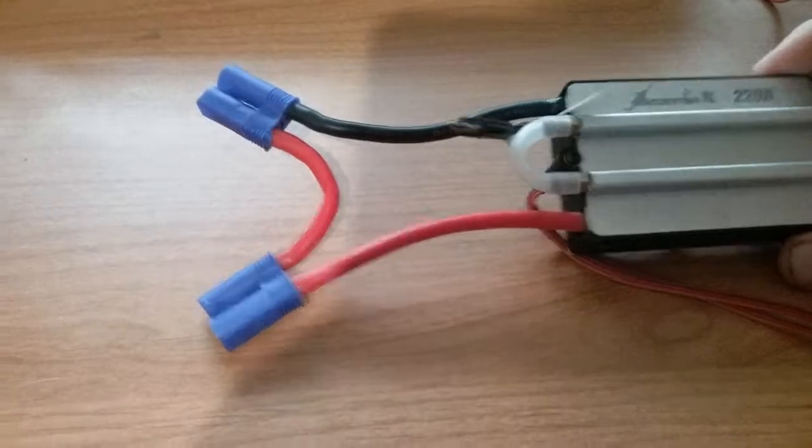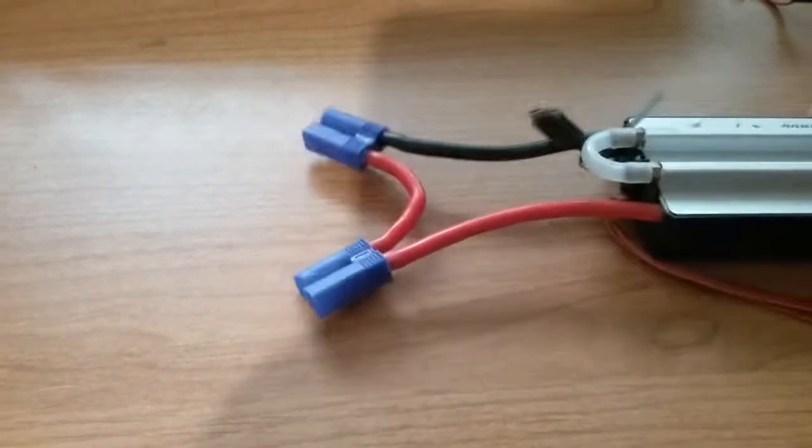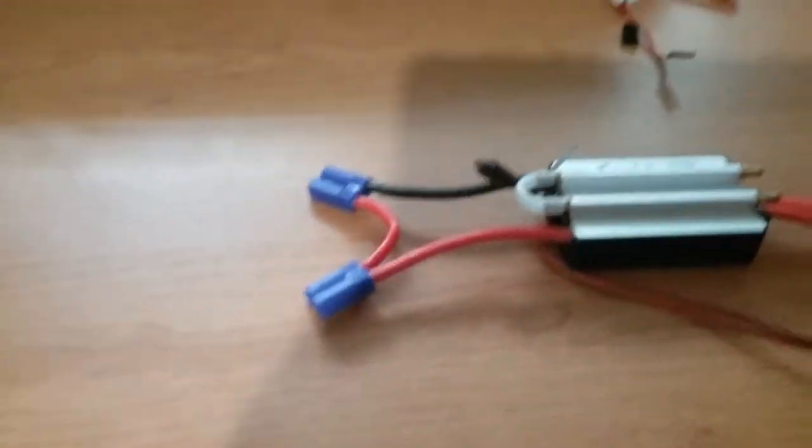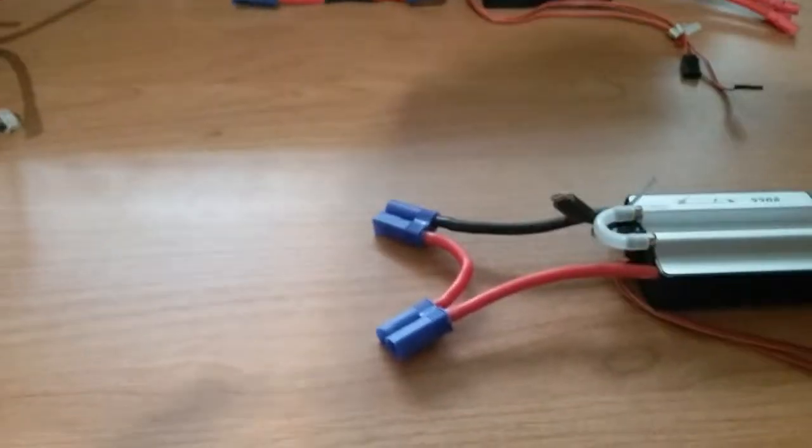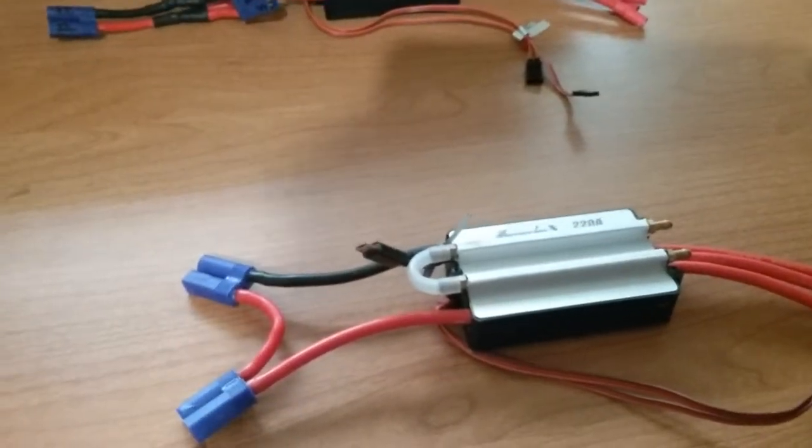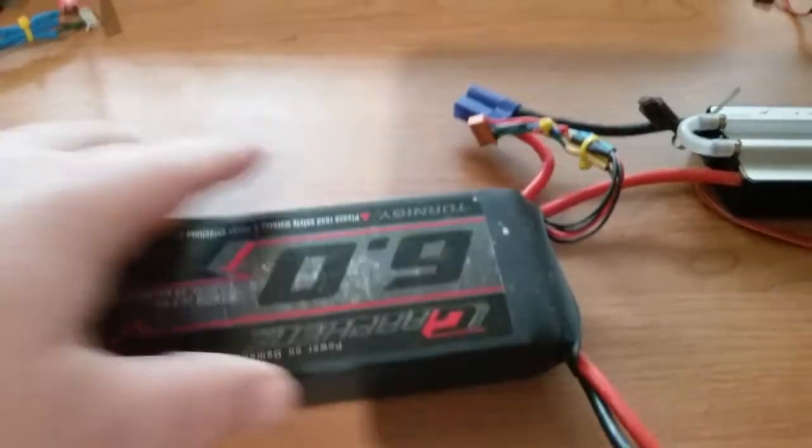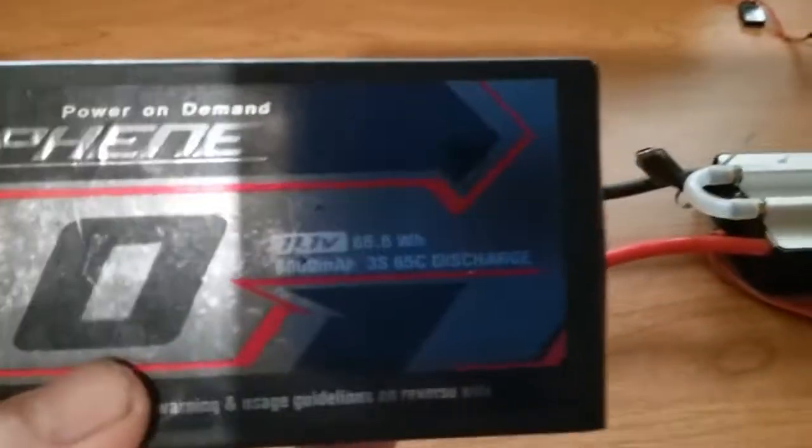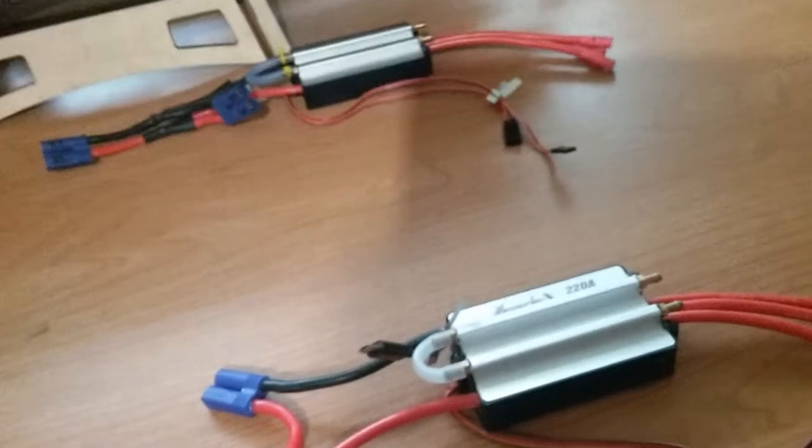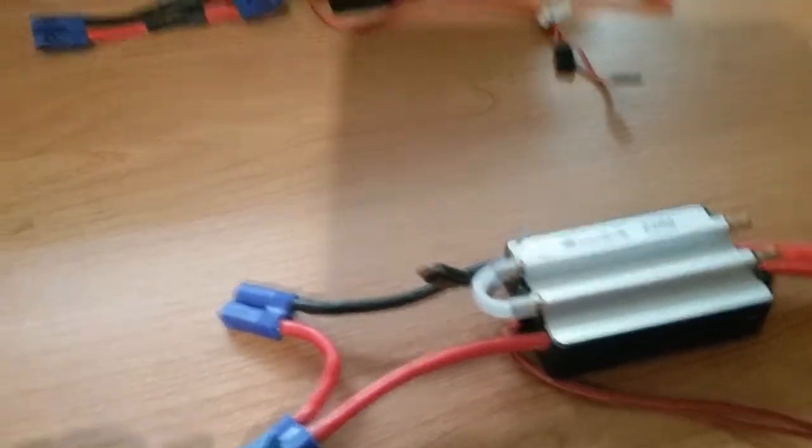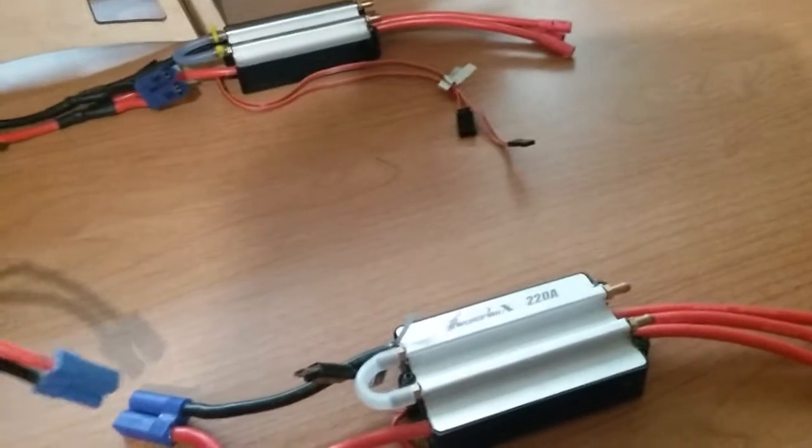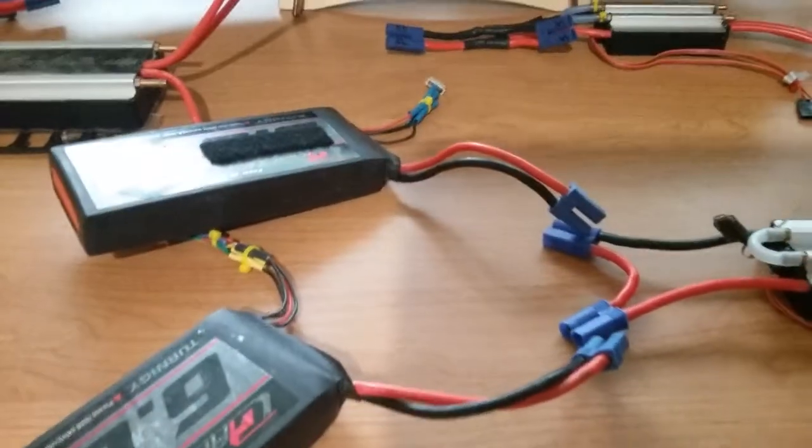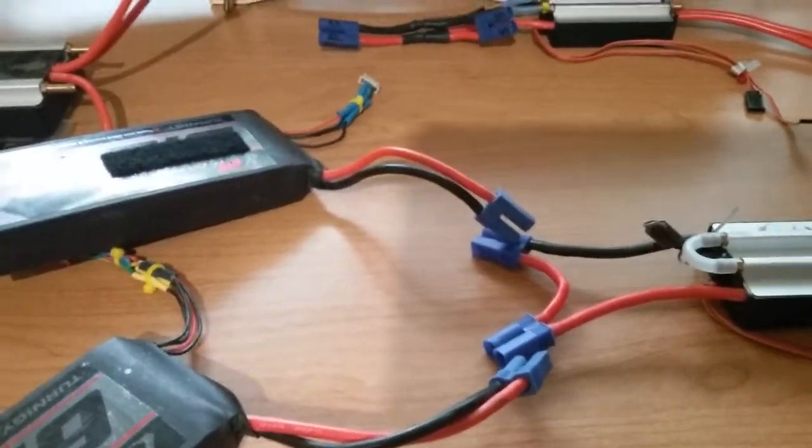This is your typical series connection, pretty common on the Traxxas stuff. You plug in, you take a 6,000 mAh 11 volt 3s, you plug that in. I can't plug it in because I'm holding the camera, but you get the idea. You plug that in, you take another 3s, you plug that in, and now...